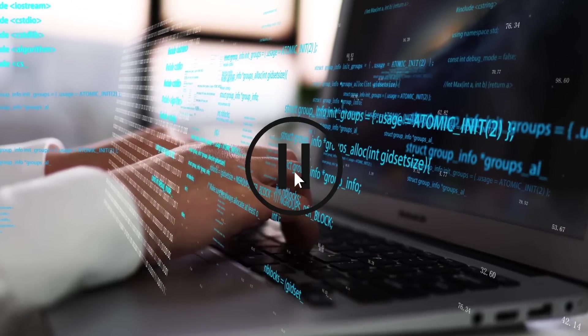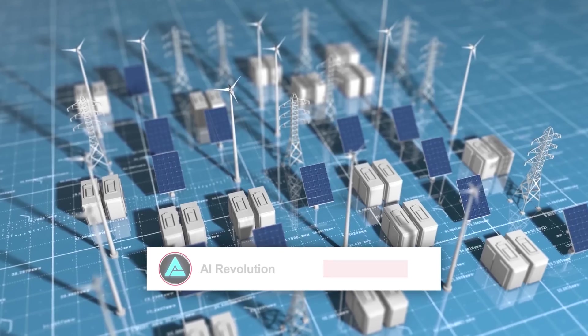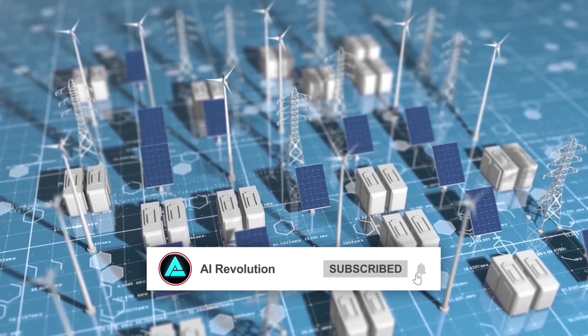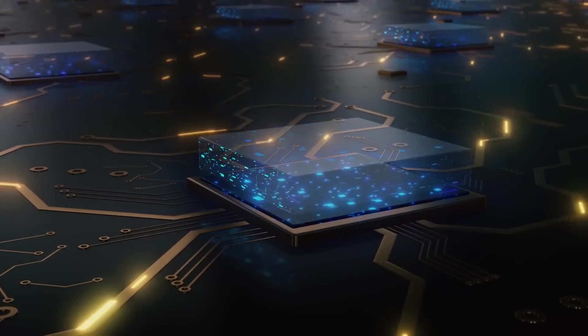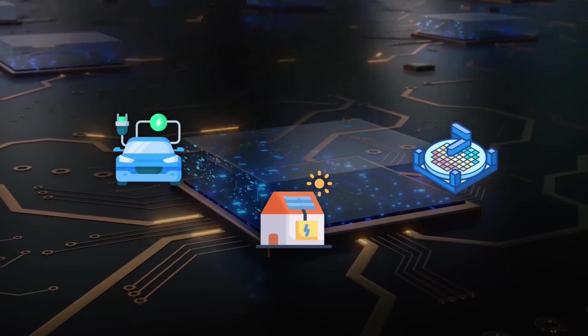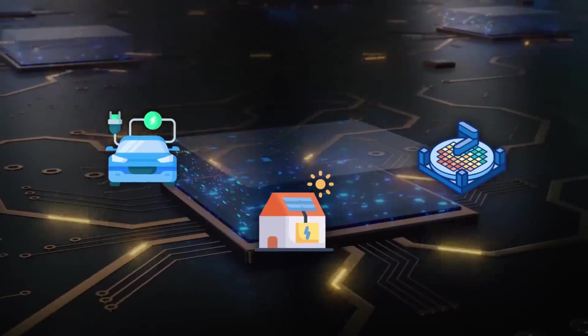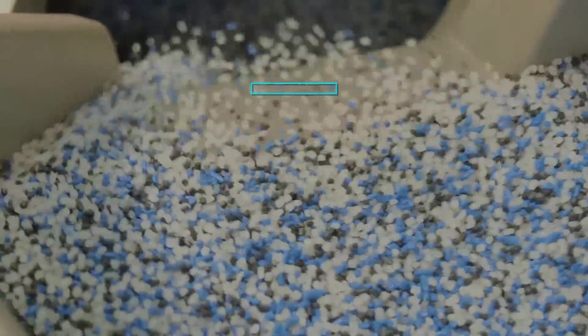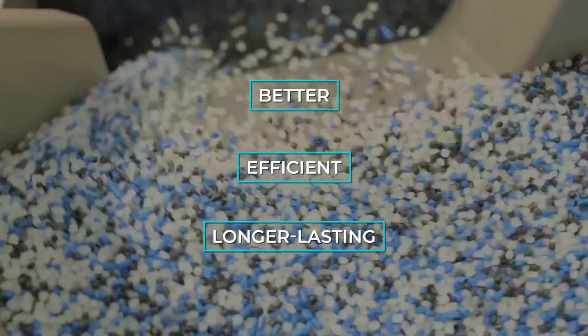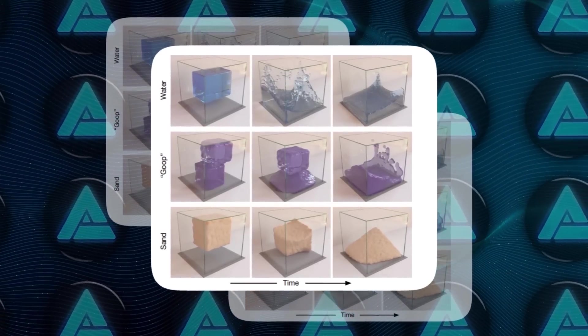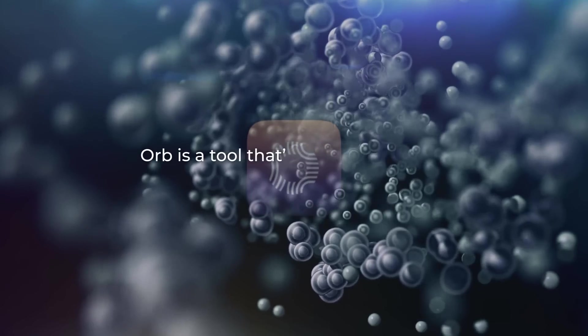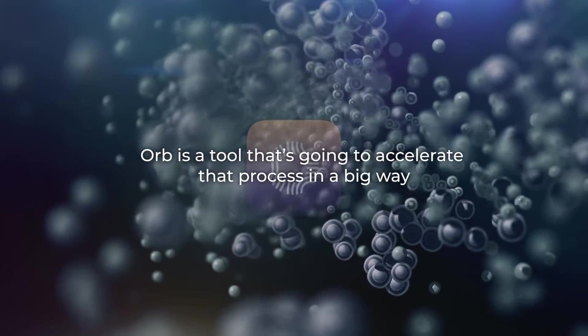Now, let me pause here for a second to explain why this is so important. We're in the middle of a massive shift toward renewable energy, and materials are at the heart of that. Whether it's batteries for electric cars, solar panels for homes, or semiconductors for basically all of our tech, the materials we use need to get better, more efficient, longer lasting, you name it. And the faster we can simulate and design these materials, the faster we can make them a reality. Orb is a tool that's going to accelerate that process in a big way.